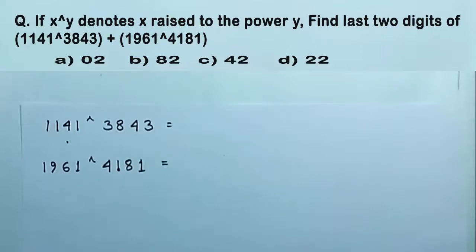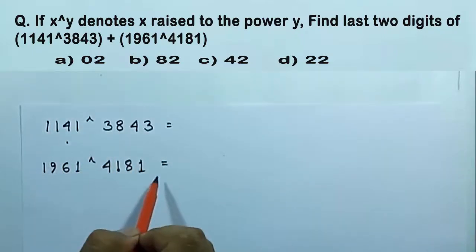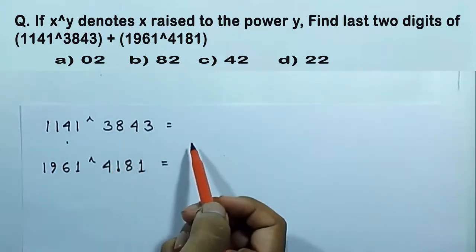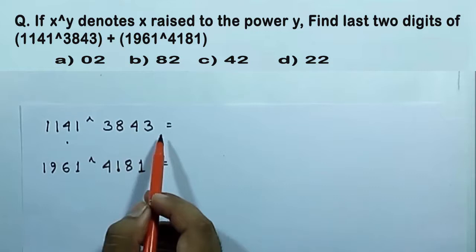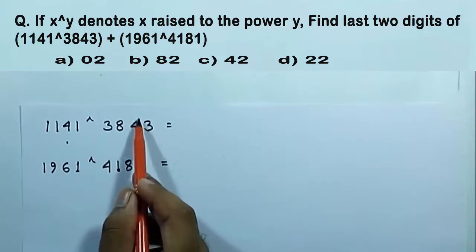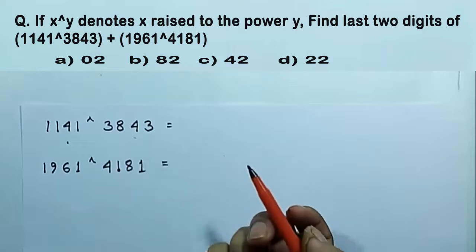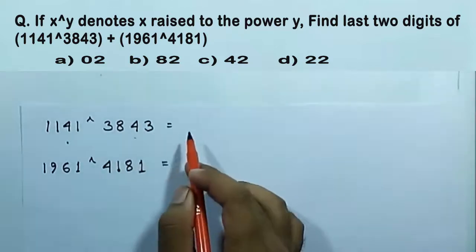As you can see here, we have to find the last two digits of the summation of these two numbers. Now to find the last two digits only, we don't need to find the whole number. We only need the last two digits of these two numbers.